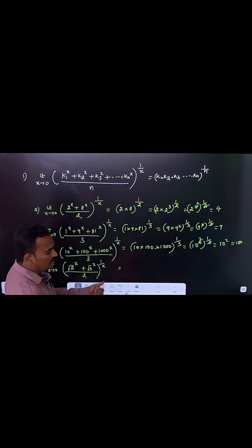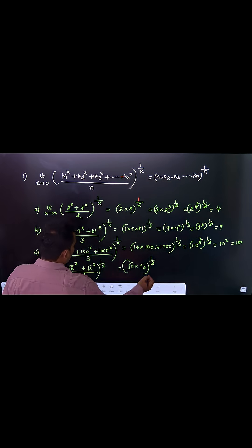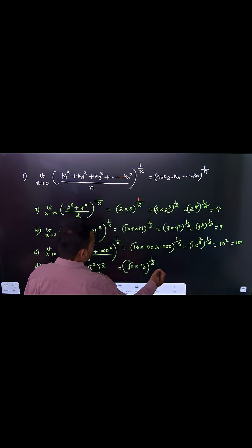Let me take the last example: √2 times √3, raised to the power 1/2. There are only two terms. This is √6 raised to the power 1/2, which is 6^(1/4), and that's your answer.